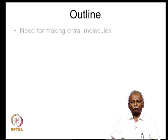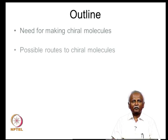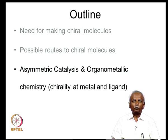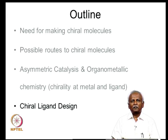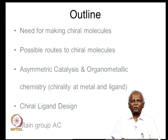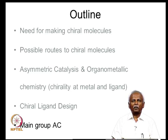We have a brief outline. First we will talk about the need for making chiral molecules and the possible routes by which we can make them, before we talk about asymmetric catalysis and organometallic chemistry. Following this, we will discuss chiral ligand design, which plays a very important role. Then we will talk about main group asymmetric catalysis, where the metal atom playing an important role is not a transition metal but one of the main group elements.